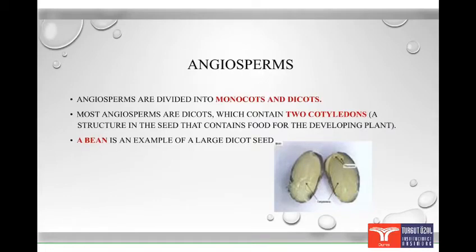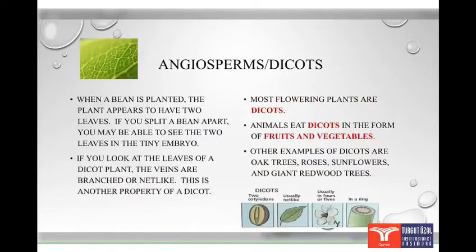Angiosperms are divided into monocots and dicots. Most angiosperms are dicots, which contain two cotyledons. A cotyledon is a structure in the seed that contains food for the developing plant. A bean is an example of a large dicot seed. When a bean is planted, the plant appears to have two leaves. If you split a bean apart, you may be able to see the two leaves in the tiny embryo. If you look at the leaves of a dicot plant, the veins are branched or net-like. This is another property of a dicot.